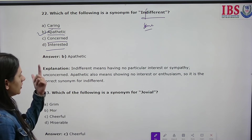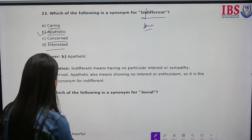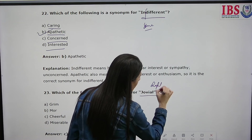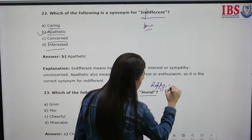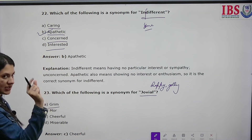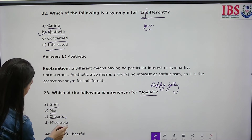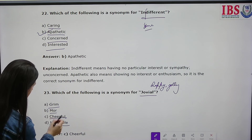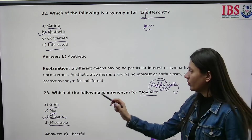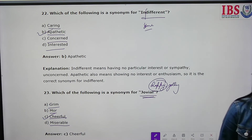Which of the following is a synonym for 'jovial'? Jovial means happy and jolly. The options include grim, cheerful, and miserable. Grim means dark or serious. Miserable is also negative. Cheerful means happy — so jovial means cheerful and cheerful is the correct answer.